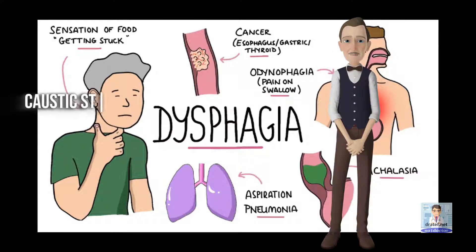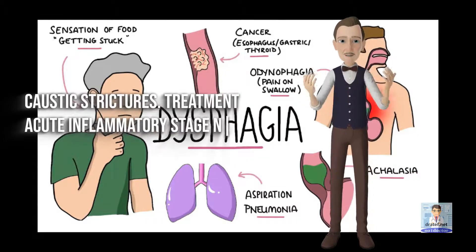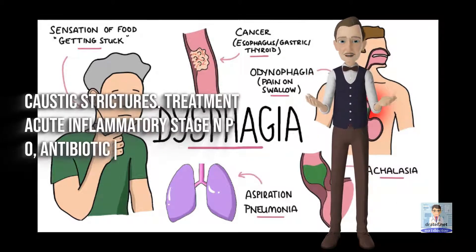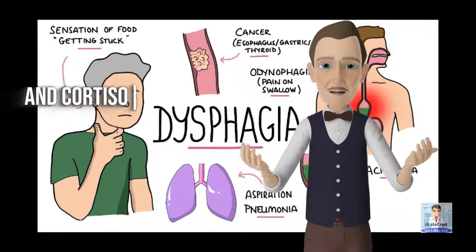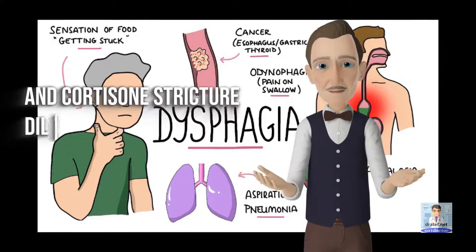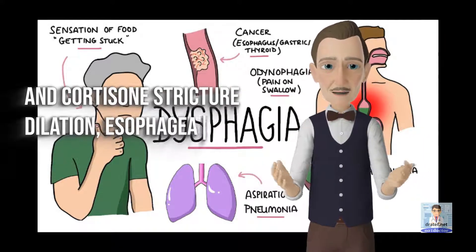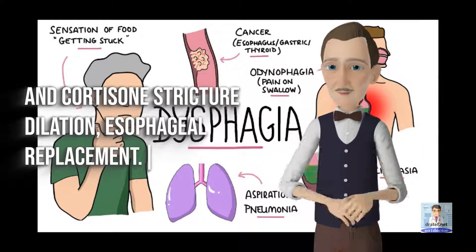Caustic strictures. Treatment: acute inflammatory stage — NPO, antibiotics, and cortisone. Stricture dilation and esophageal replacement as needed.